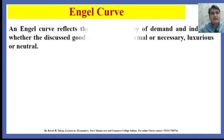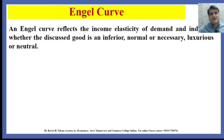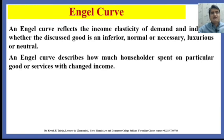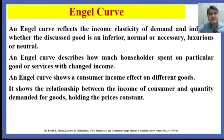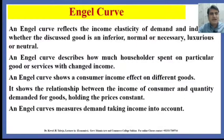An Engel Curve reflects the income elasticity of demand and indicates whether the discussed good is an inferior, normal, necessary, luxurious, or neutral good. An Engel Curve describes how much a household spends on particular goods or services with changed income. An Engel Curve shows a consumer's income effect on different goods. It shows the relationship between the income of a consumer and quantity demanded for goods, holding the price constant. An Engel Curve measures the demand taking income into account.